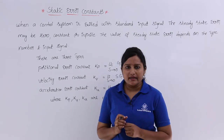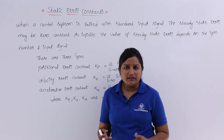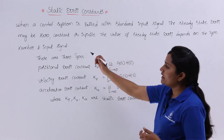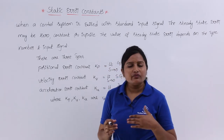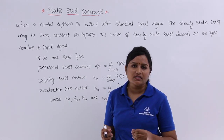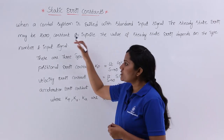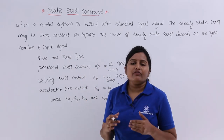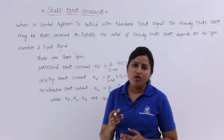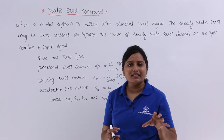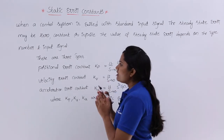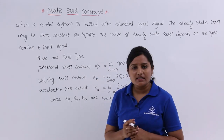The steady state error depends upon the type number of the system and the input signal. The type number is nothing but the number of poles at the origin, which decides the type number of the system. So whatever control system we are exciting with a standard input signal may have steady state error as zero, constant, or infinite. The static error constants are of three types.